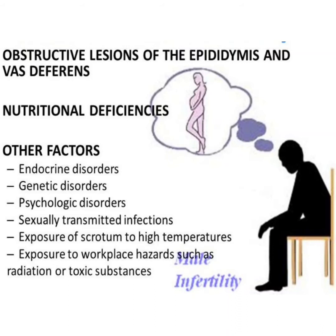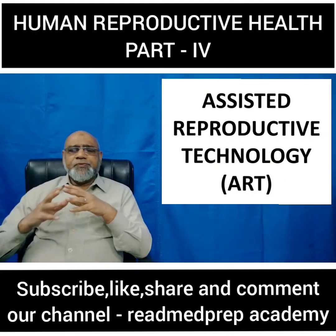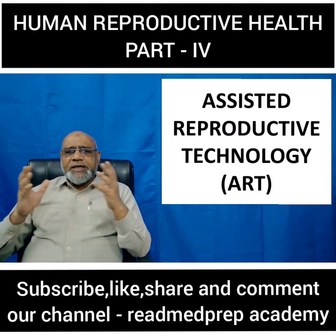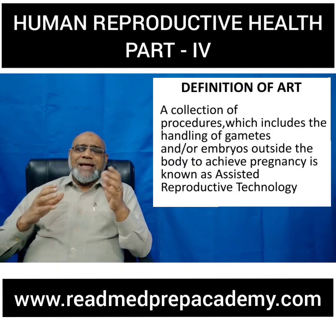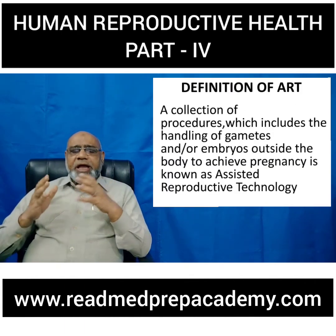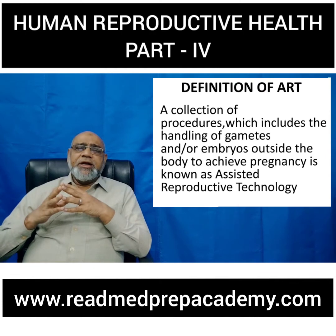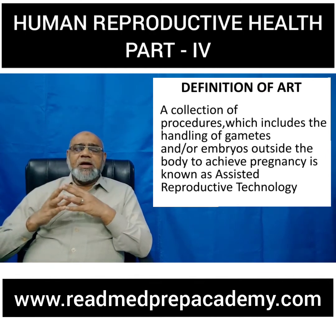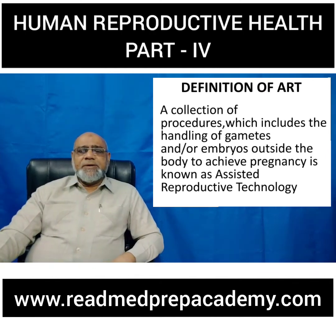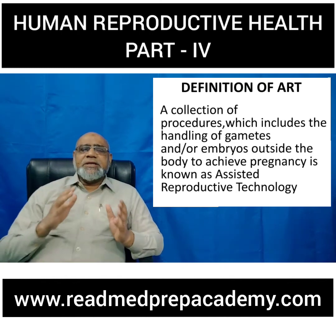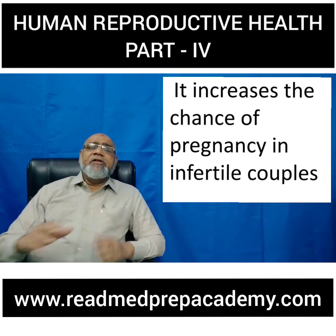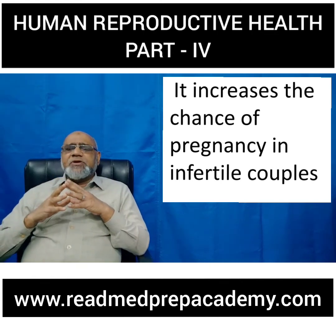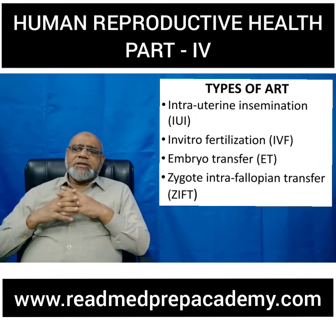Now let us move on to assisted reproductive technology. What is assisted reproductive technology? It is a collection of procedures which includes the handling of gametes and/or embryos outside the body to achieve pregnancy. It increases the chances of pregnancy in infertile couples. The different types of assisted reproductive technology are intrauterine insemination (IUI), in vitro fertilization (IVF), embryo transfer (ET), zygote intrafallopian transfer (ZIFT), gamete intrafallopian transfer (GIFT), intracytoplasmic sperm injection (ICSI), pre-implantation genetic diagnosis, oocyte and sperm donation, and surrogacy.